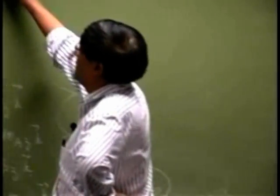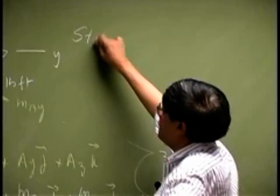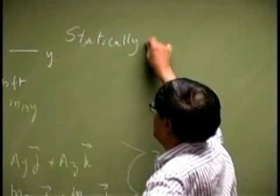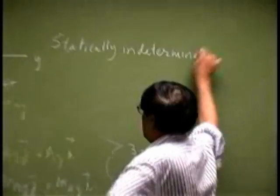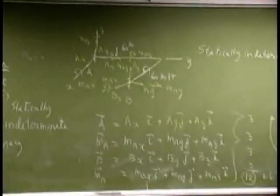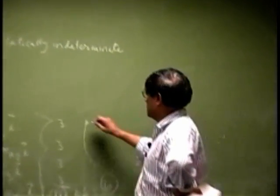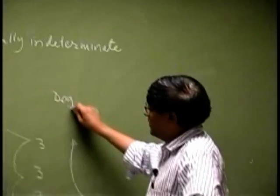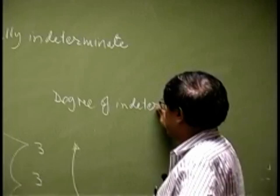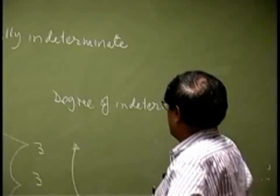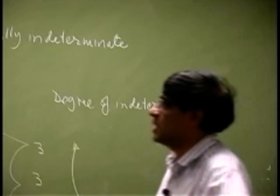This system is also statically indeterminate, or the equations from equilibrium are not sufficient to solve for all the unknowns. And this number 6 will be the degree of indeterminacy, or you need to look for six more equations to solve this problem.